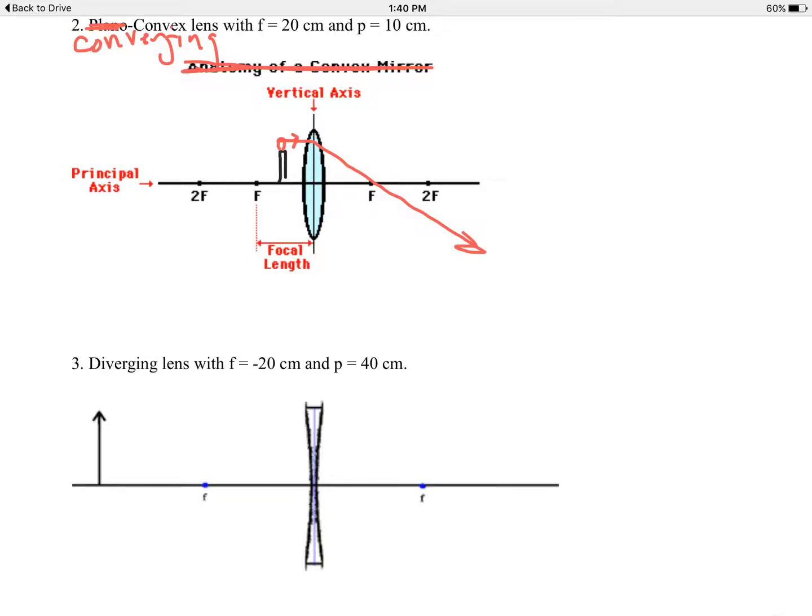And the other one that's kind of a slam dunk is rule number three. Number two doesn't work too well here. But the third one, the ray of light coming from the object that goes through the center of the lens, something like this.